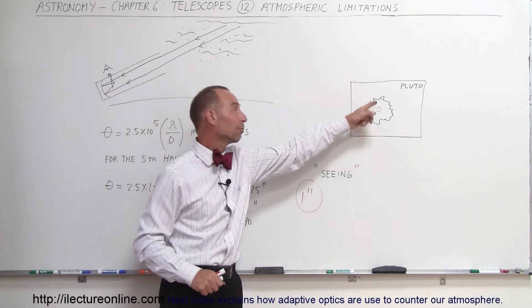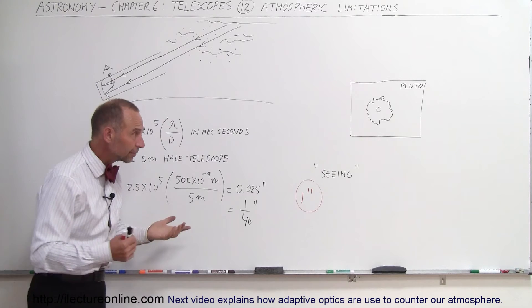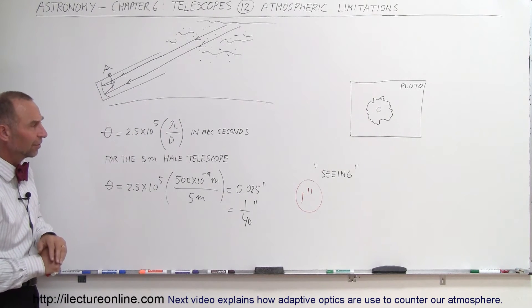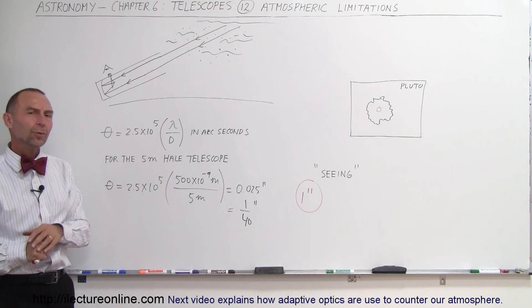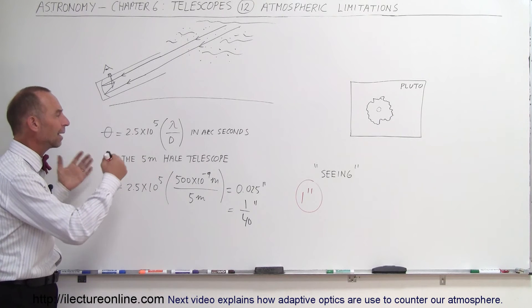And so therefore, the resulting picture of Pluto will look like that on even good seeing nights. So how do we get around that? What can we do to get over the atmospheric limitations?